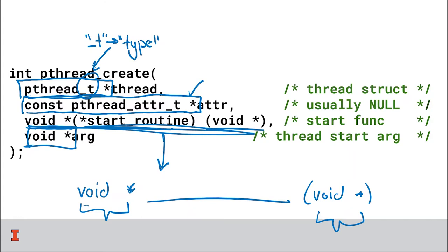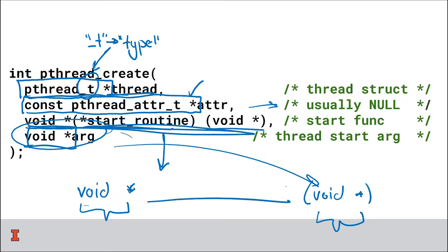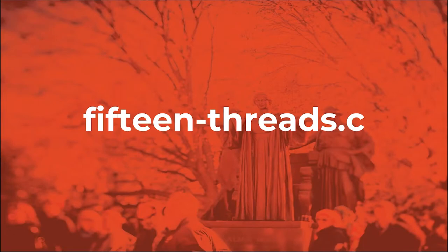So to create new threads, we call pthread_create with four parameters: a thread ID structure, a pthread attribute structure (we'll always pass null for this in CS240), and third and fourth arguments about the function call. The last void star arg is what actually gets passed into the void star when the thread is created. I think looking at this in the abstract makes sense to some of you, but let's look at an example in code.